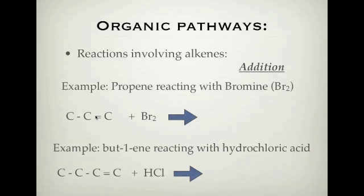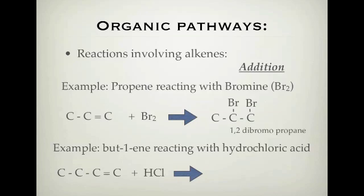Here are two examples. First, we have propene reacting with bromine (Br₂). Prop- means three carbons, and -ene means it's got a double bond. If we're adding bromine to this, we break the double bond and put one Br on one end and another Br on the other end. Our product will be 1,2-dibromopropane. The bromine gets snapped in half — one end goes on one carbon and the other goes on the other carbon, always at the carbons involved in the double bond.